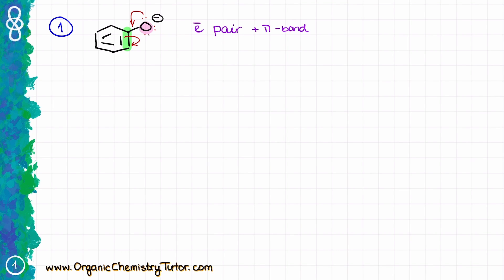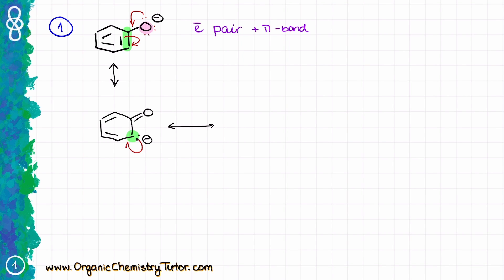In order to accept those electrons, carbon of the pi bond would have to take the electrons and push them onto its neighbor. So that is going to give me the next resonance structure that will look like this. I now have a double bond between carbon and oxygen, there is an electron pair on the bottom carbon, which is going to have a negative charge, and the rest of my molecule is just as is. The next step is to look at where my excessive electron density is, which is this carbon over here, and from there I can go towards my next pi bond.